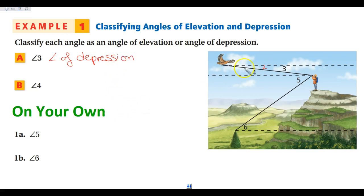Angle four goes from the man's viewing level and opens up toward the hawk. The guy has to look up to see the hawk, so it is an angle of elevation.